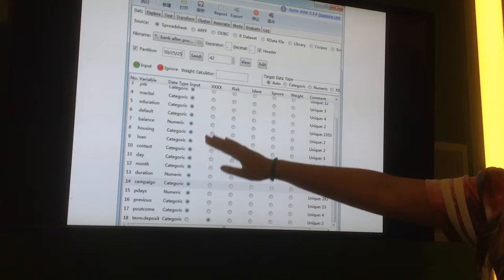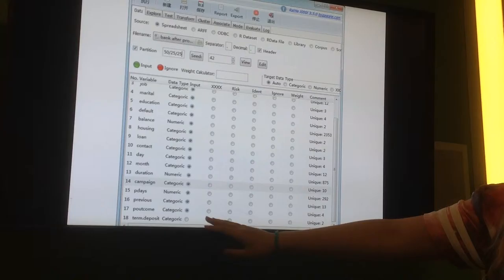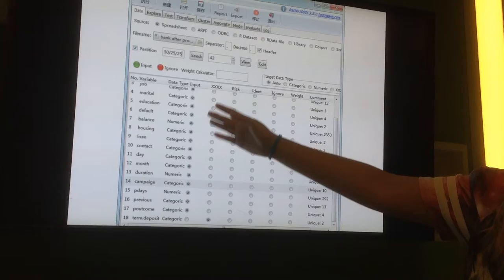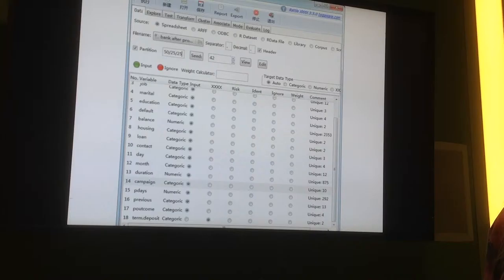And we will set our attributes as input and the target attribute term deposit as the predicted one. Because this is the first time we do data mining, we can't ignore any attributes because we don't know they are important or not for us to do the classifier.